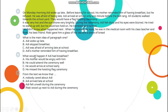Next question. What would happen if Adi had breakfast? Apa yang akan terjadi jika Adi sarapan? A: his mother would be angry with him. B: He could attend the ceremony well. C: He would arrive at school early. D: He missed the hoisting flight. Dari pertanyaannya, jika Adi sarapan, apa yang akan terjadi? Hari itu adalah hoisting ceremony. Berarti jawabannya yang paling tepat: He could attend the ceremony well — dia dapat mengikuti upacara dengan baik.